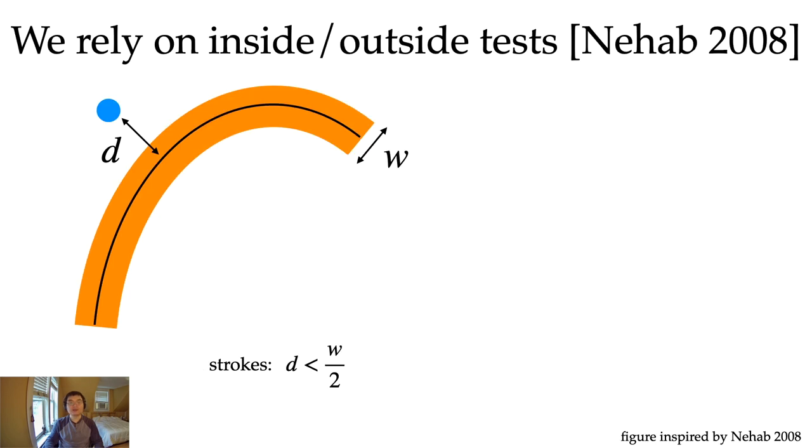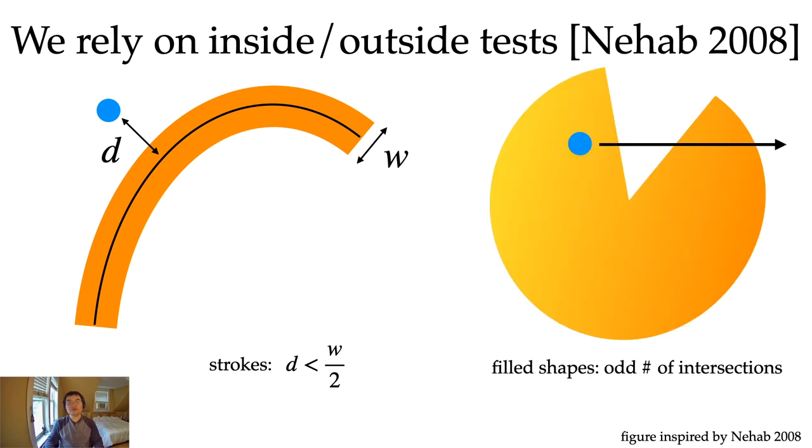To render the shapes, we rely on the inside-outside tests, inspired by Nehab and Hoppe's work in 2008. Given a point and the curve, we test if the point is inside the curve. For strokes, we need to find the distance d between the point and the curve, and if this distance d is smaller than half the stroke width w, then we are inside the stroke. For filled shapes, we trace a ray from the point and see how many times we intersect the shape. If it is odd number of times, the point is inside the shape. Otherwise, it is outside.